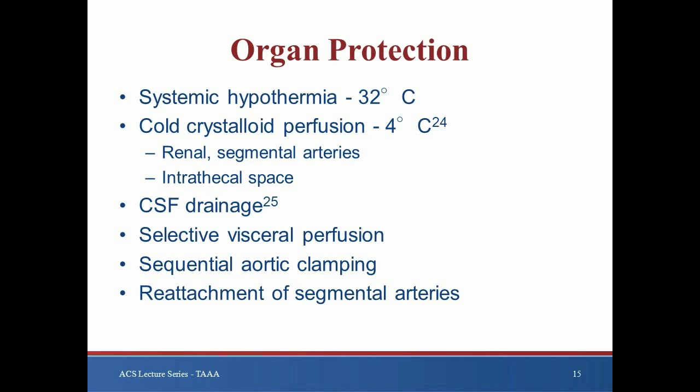In addition to circulatory support, multiple adjunctive measures to combat ischemic injury of the abdominal viscera and the spinal cord are advocated. Permissive or active systemic hypothermia to 32 degrees Celsius, depending on the method of circulatory support, is universal. Additionally, Coselli and others advocate cold crystalloid renal perfusion, showing a reduction in postoperative acute renal failure. Cold crystalloid perfusion of either the intrathecal space or segmental arteries to achieve selective spinal cord hypothermia has been described as well, but is not performed at most centers.